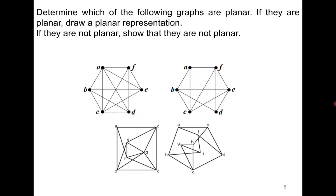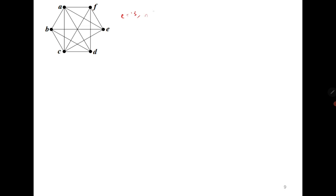Now let us try some very interesting questions. Please spend some time trying each one yourself. For the first one, if the graph looks quite dense, it is a good decision to first try the Euler formula. This graph has 13 edges, so E = 13, and it has order 6. Computing 3n − 6 gives 18 − 6 = 12, and since 13 > 12, we can easily conclude that the graph is not planar.